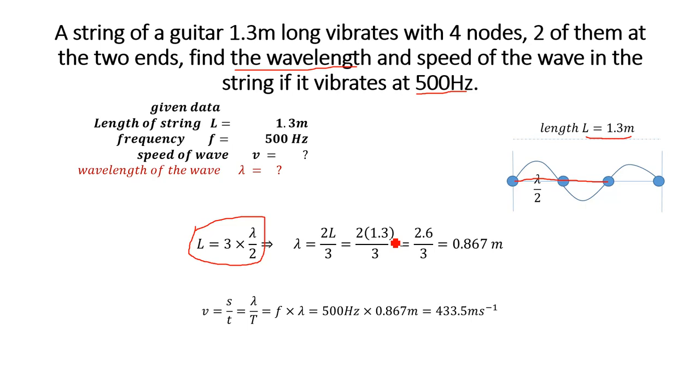Multiplying 2 with 1.3 meters, we will get 2.6, and dividing 2.6 by 3, we will get 0.867 meters. So this is the required value for wavelength. Now let's calculate speed of the wave.